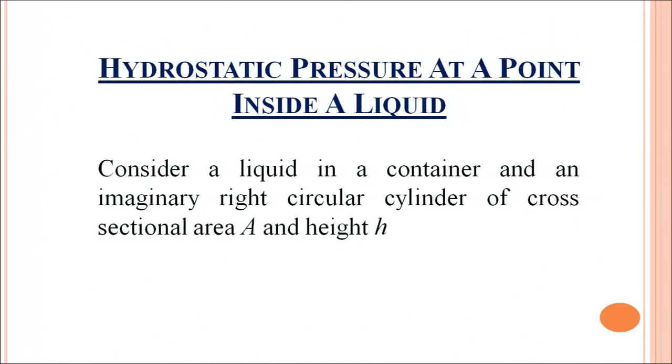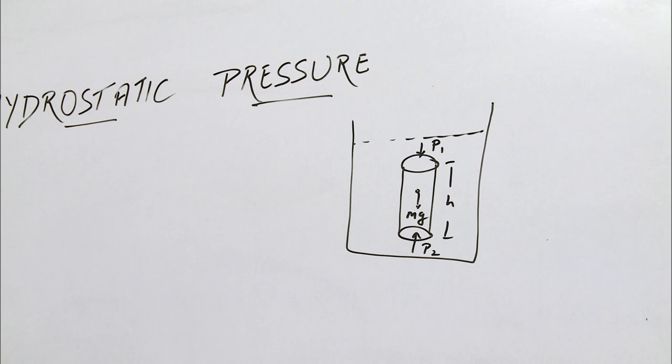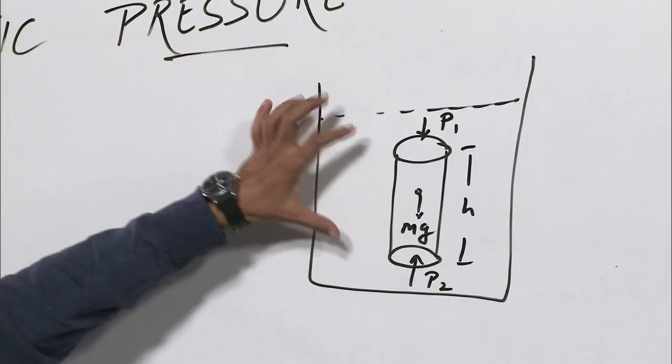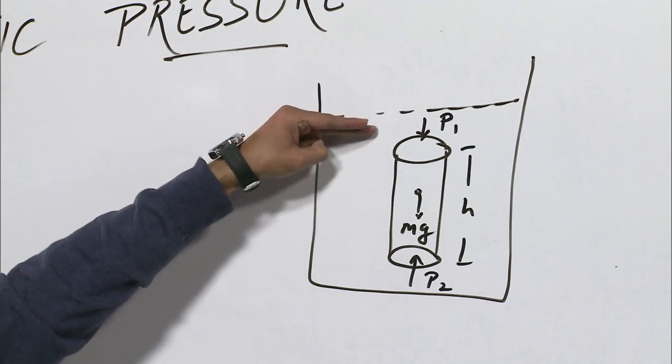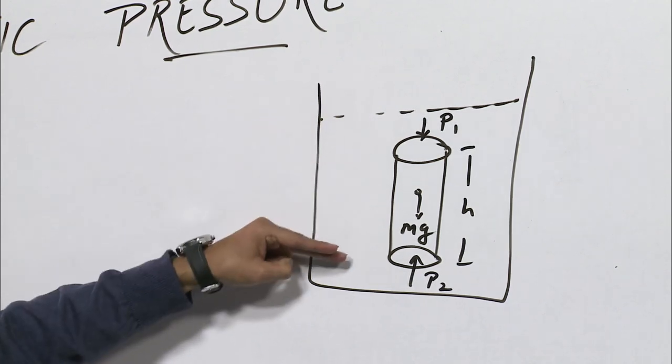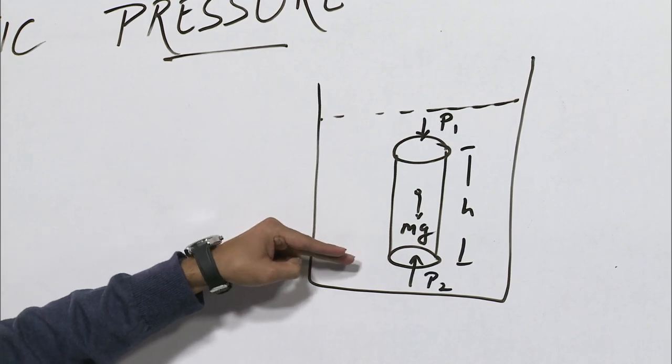Next, we will see what would be the hydrostatic pressure at a point inside a liquid. We will consider a liquid in a container and an imaginary right circular cylinder of cross-sectional area which is denoted by A and the height h. We have plotted a diagram giving the condition of hydrostatic pressure. The cylinder in this condition is in a state of equilibrium. Here we can see when the cylinder is in equilibrium condition, the pressure exerted by the upper surface and the thrust by the liquid is at the lower bottom side.